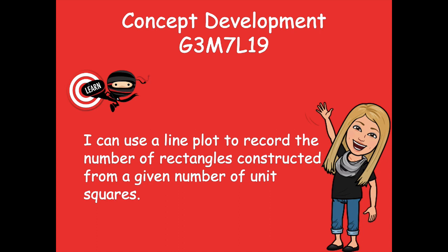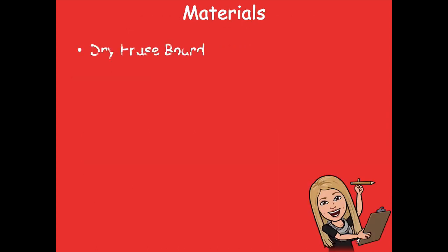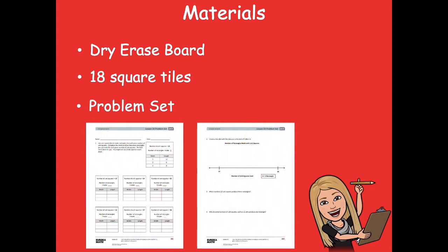All that means is we're going to find out different rectangles that we can make given a specific area or number of tiles, and then we're going to plot that on our line plot. The materials that you'll need for this lesson are your dry erase board, 18 square tiles, and your problem set. Make sure that you have those before we get started. There are four total problems and we're going to do the first two of them all together, so by the time you finish this video, you'll have half of your problem set done.